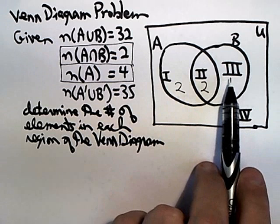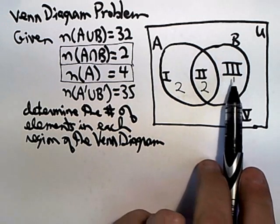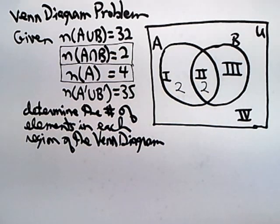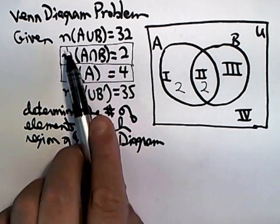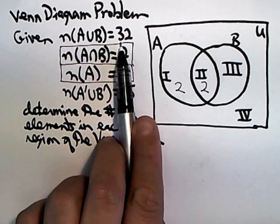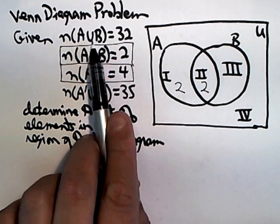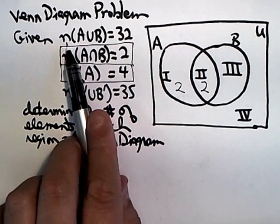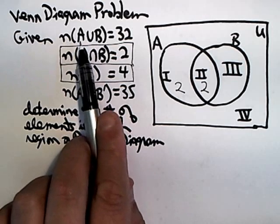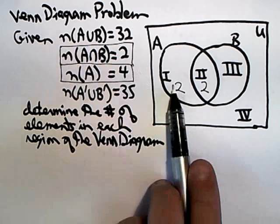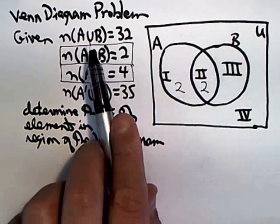Now, they don't tell us how many are in circle B, so we can't play that same game with region 3, but they do tell us that the number of elements in A union B is 32. Now remember, it's not an intersection, this is union. The number of elements in A union B, that means if you look at the two circles together,